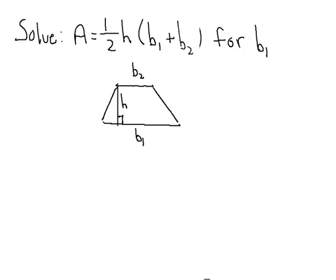All right, so let's go ahead and proceed to solve this for b sub 1. Now my recommendation would be that we first try to eliminate the fraction from the formula, which is the one half. And to do that, we'll multiply both sides of the equation by 2.